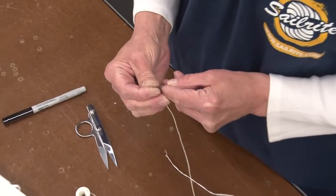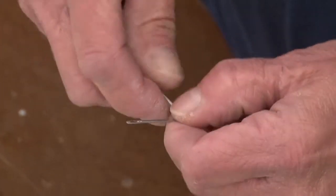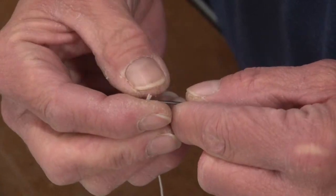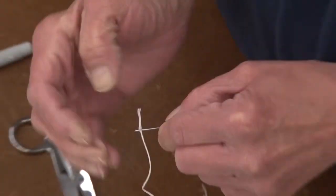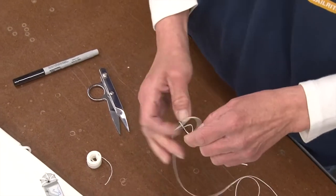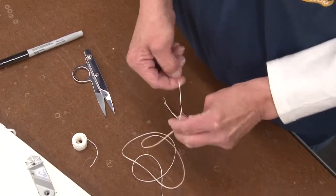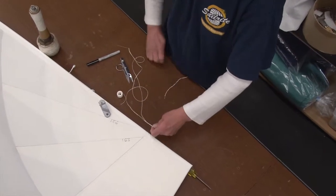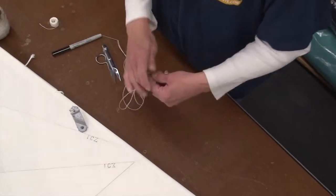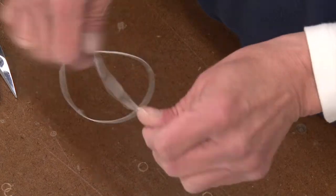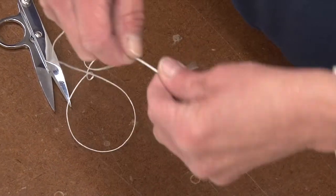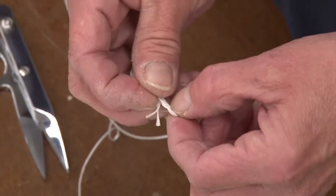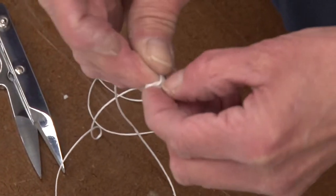So Deb's cut the waxed twine and then she's going to feed it through the needle to double it up and then put a knot on the end. I like using the smaller needles because they're easier to get through. However, if you're going to use a palm, you may want to use a little bit bigger needle to prevent it breaking. The best sailmaker hand needles that I know of are made by the company William and Smith. I would always recommend purchasing the William and Smith hand needles.